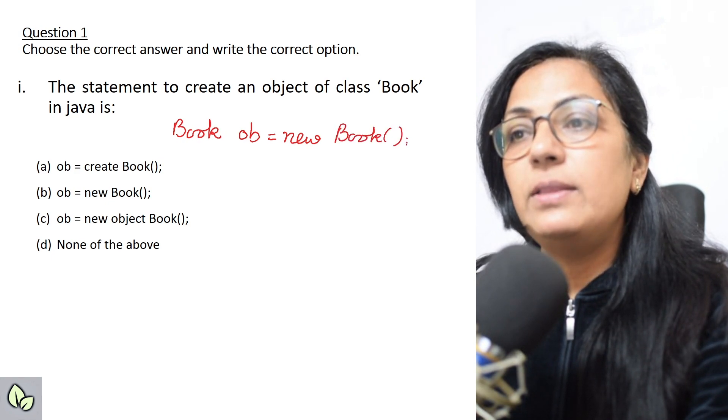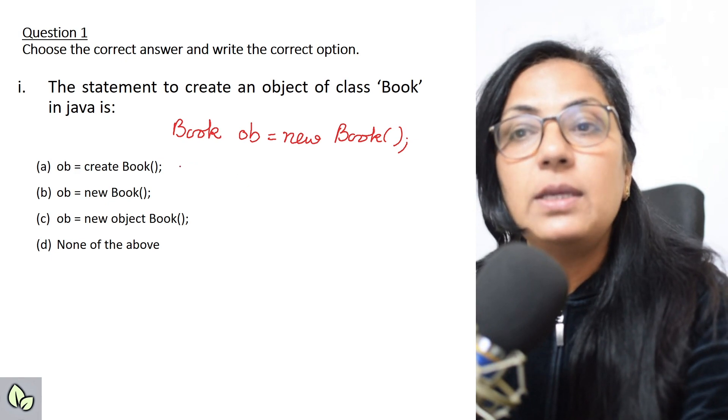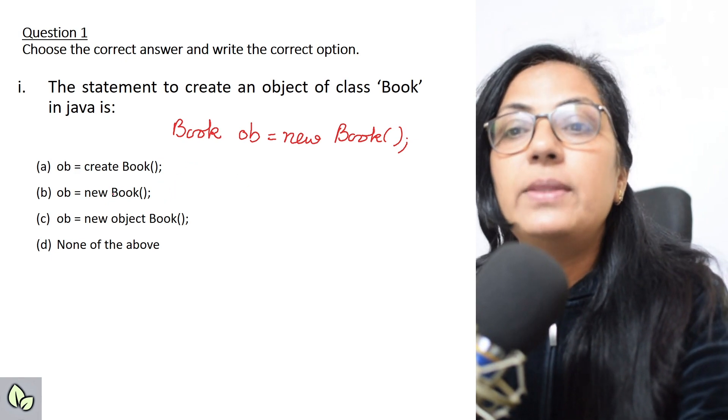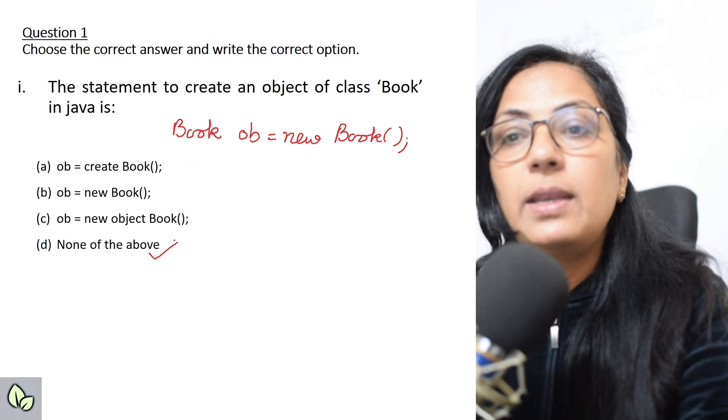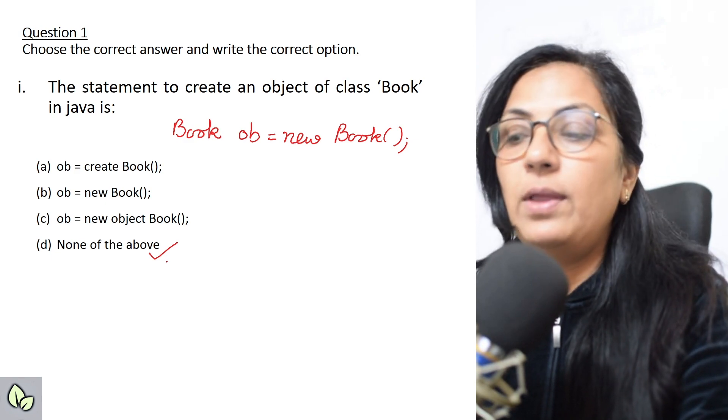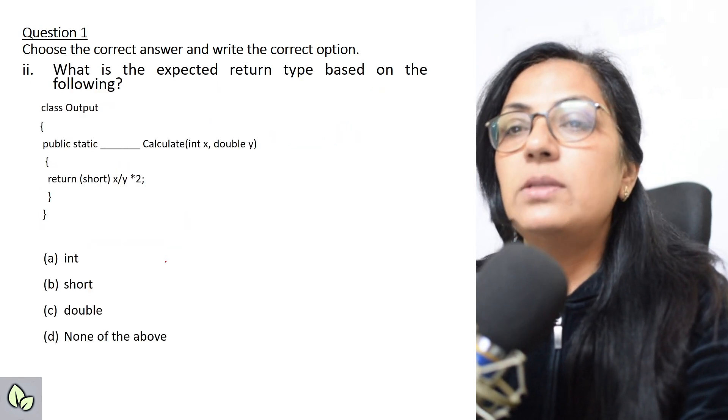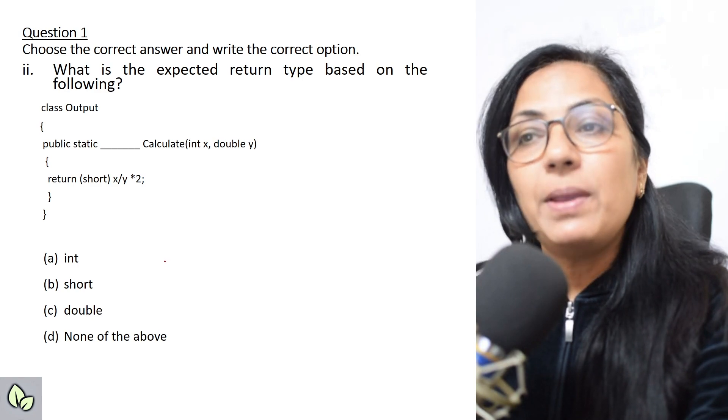Now please verify whether this answer is there in any of the options. This is not present, so the correct answer will be none of the above. Now the second question: what is the expected return type based on the following?